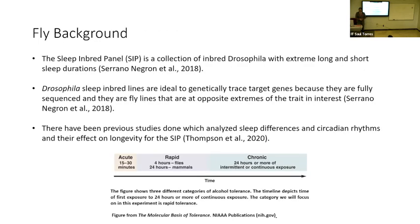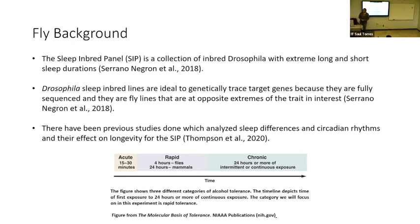The flies we used were from a sleep inbred panel, which is a collection of inbred flies that have extreme long and extreme short sleep durations. Extreme long sleep can mean at least 12 hours; extreme short sleep can mean just over an hour. By sleep inbred, that means they were bred for 13 generations and artificially selected by each metric. They're ideal to genetically trace target genes because they're poly-sequence, and there have been previous studies analyzing sleep differences in circadian rhythms and their effect on longevity on these same flies.